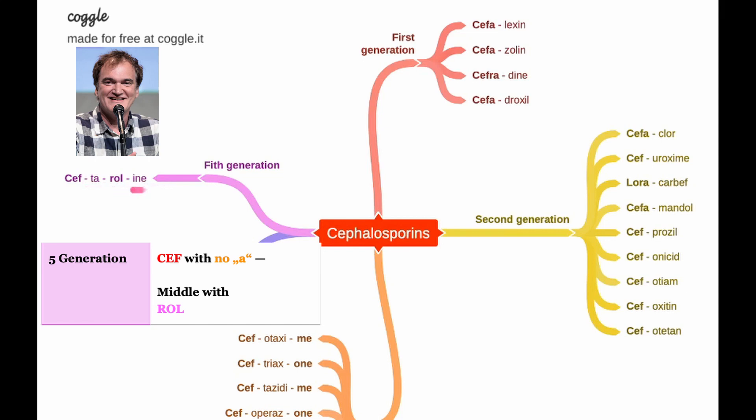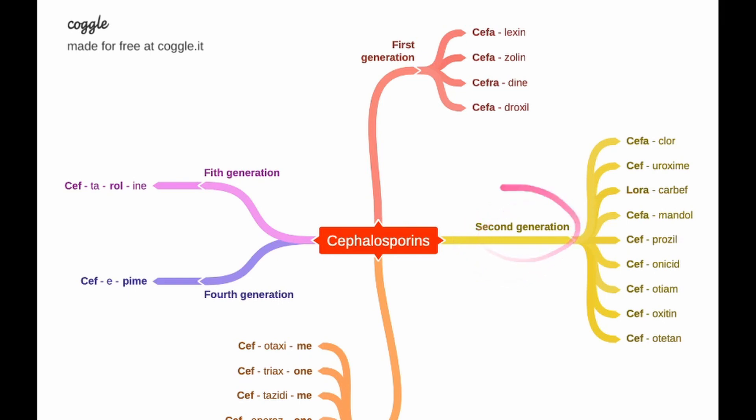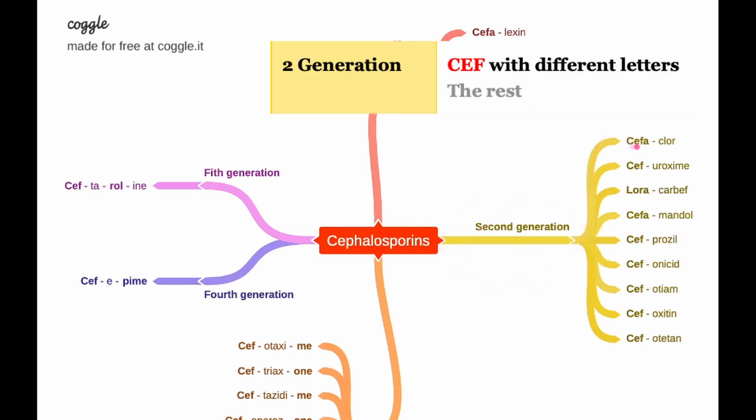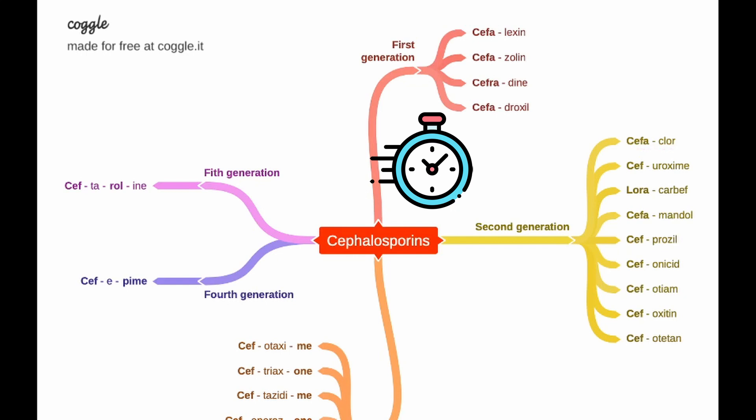Now the second generation. The basic rule is first it starts with 'cef' and then with different letters, so there's no rule here except the first three are the exception but the rest is following this rule. The first one is cef with 'a' and 'clor' sounds like clock. This is an exception because cef with 'a' is usually first generation but here it is second generation, don't confuse this with first generation.